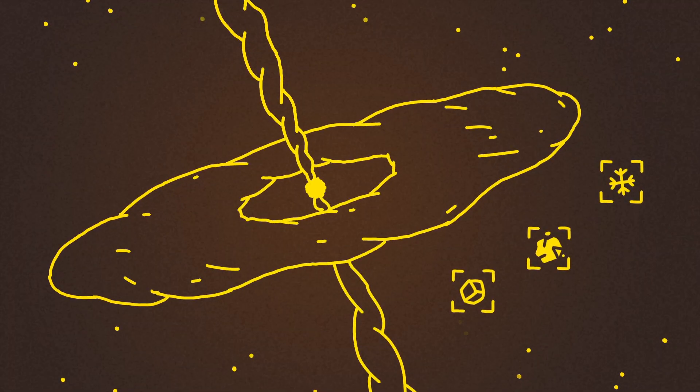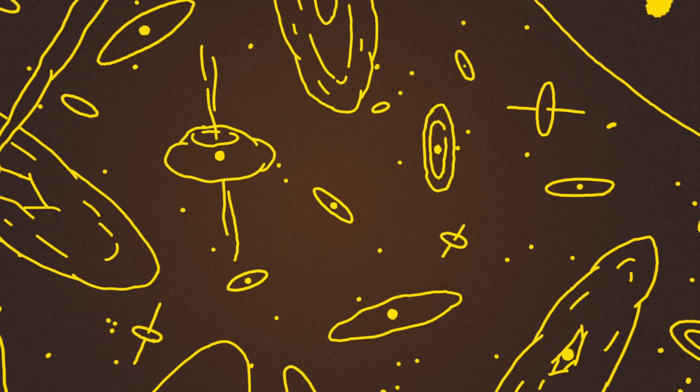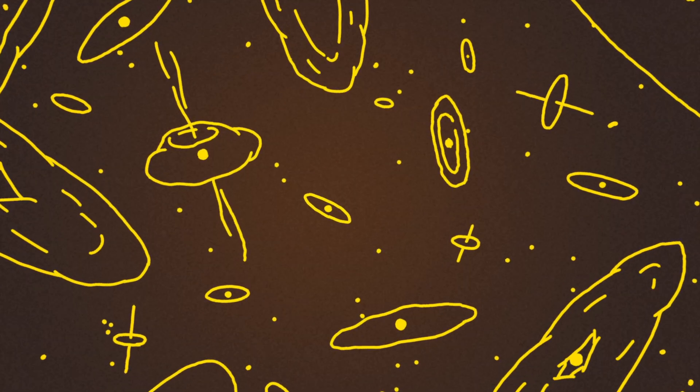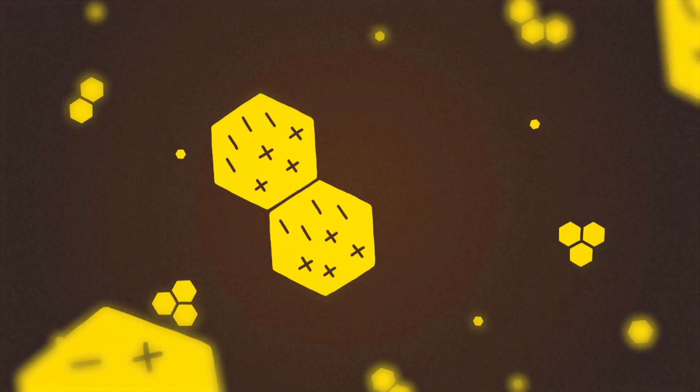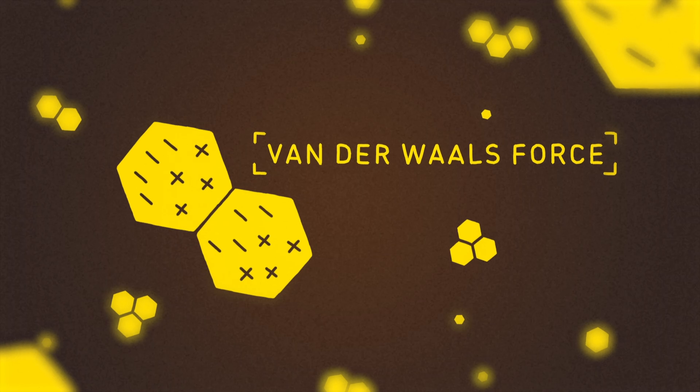We've observed thousands of these disks in the sky at various stages of development, as dust clumps together into larger and larger masses. Dust grains 100 times smaller than the width of a human hair stick to each other through what's called the van der Waals force.